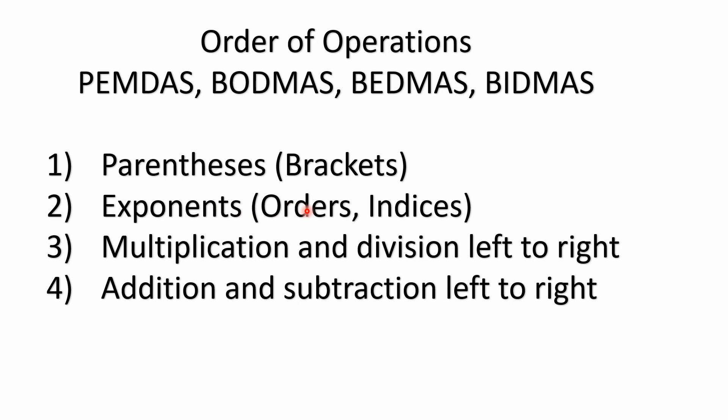Now number three, this is where we start to throw some people off. They forget how the acronyms work, but multiplication and division actually are just solved left to right. Multiplication and division have equal precedence. Division is the same thing as multiplying by a reciprocal, so yeah, you just work them left to right no matter what. And then number four, addition and subtraction left to right. Again, addition and subtraction have equal precedence, so they're solved left to right.